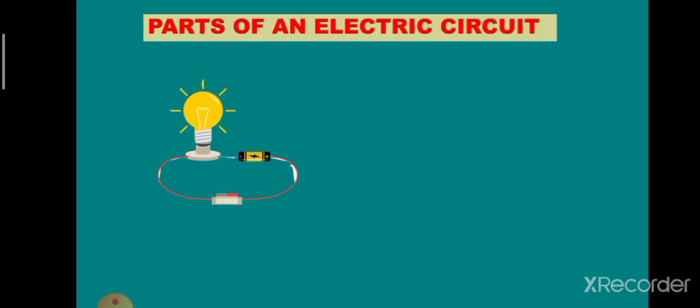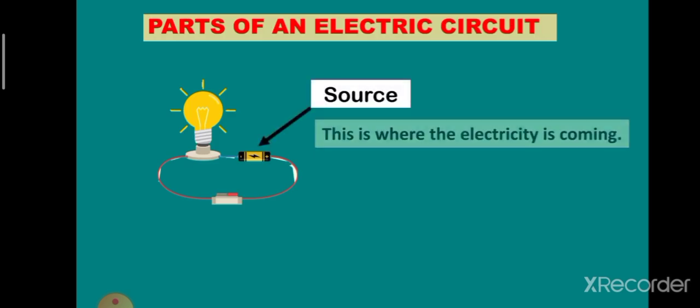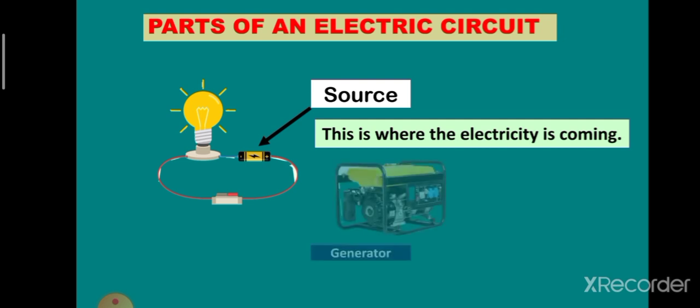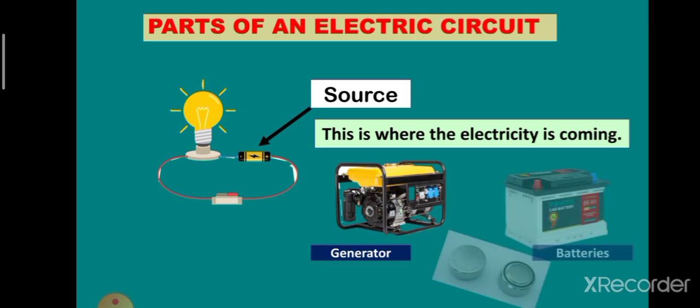The first part is the source. It is where the electricity is coming from. It can be from a generator, or a cell, or batteries.